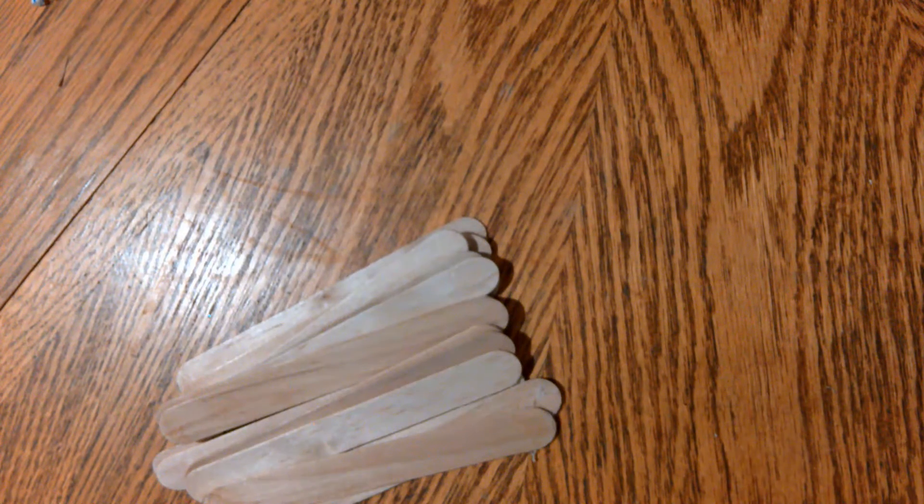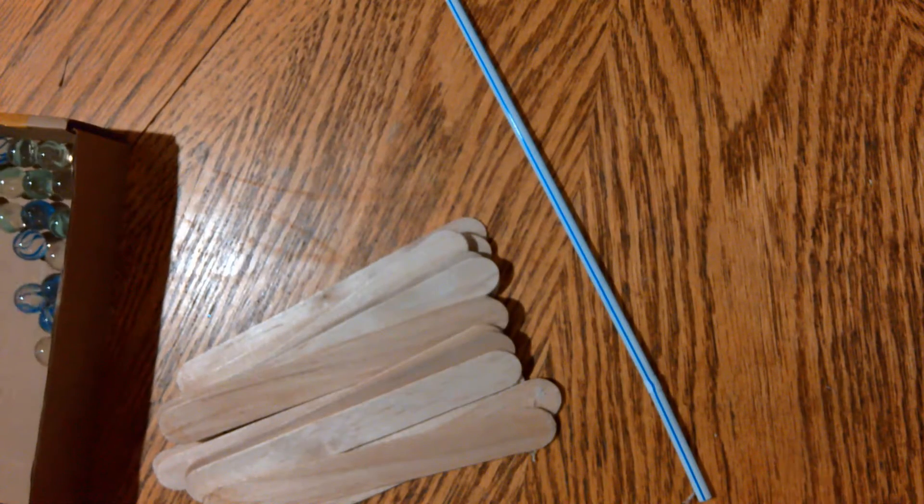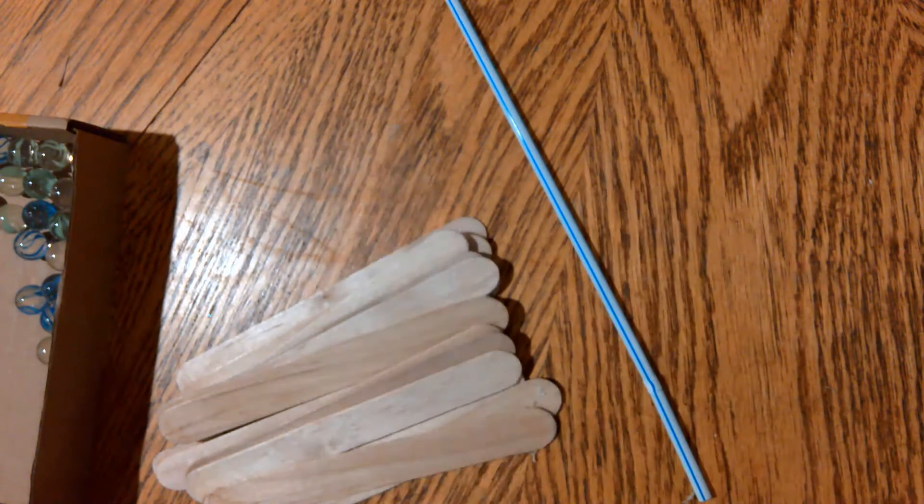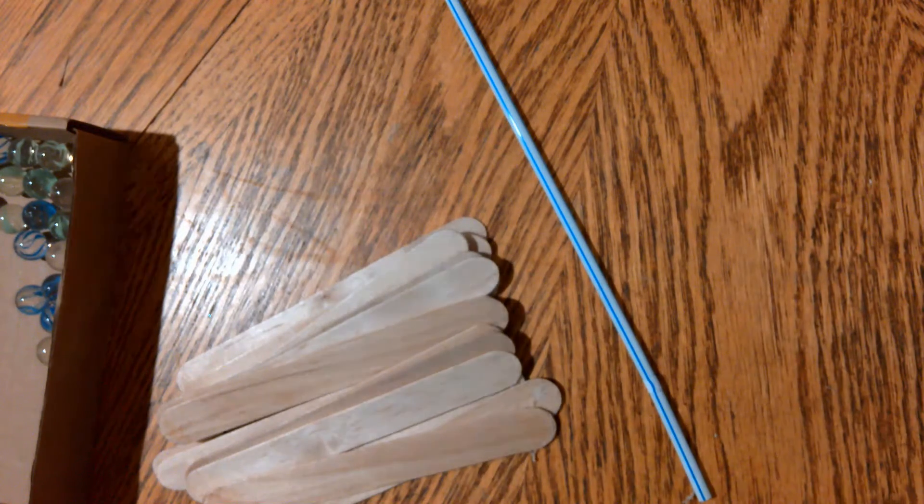To make the Newton's Cradle you're going to need a set of craft sticks, some marbles, and a straw. You will also need some glue, some string of some kind, a pair of scissors, and some tape.